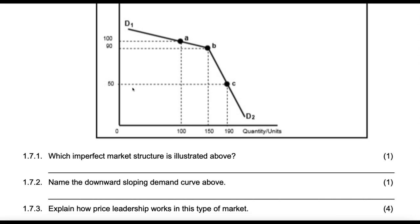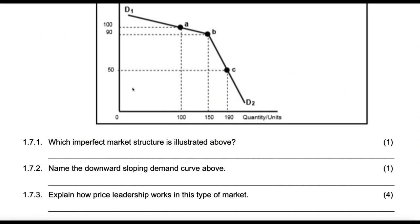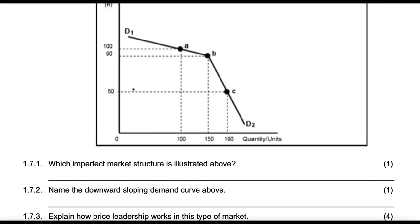Then name the downward sloping demand curve above. This one is called a kinked demand curve.